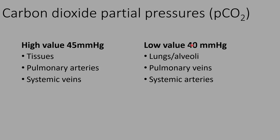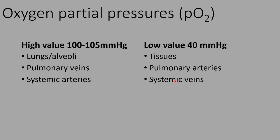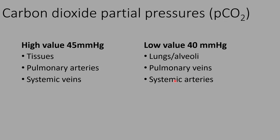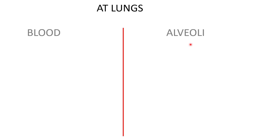Notice that anywhere where oxygen is high, carbon dioxide is low, and anywhere where oxygen is low, carbon dioxide is high — they are exactly opposite. You only need to know those six locations and those three numbers. If you know those three numbers, those six locations, and the path of blood, you've got it — because that's what drives the movement of gases across membranes.